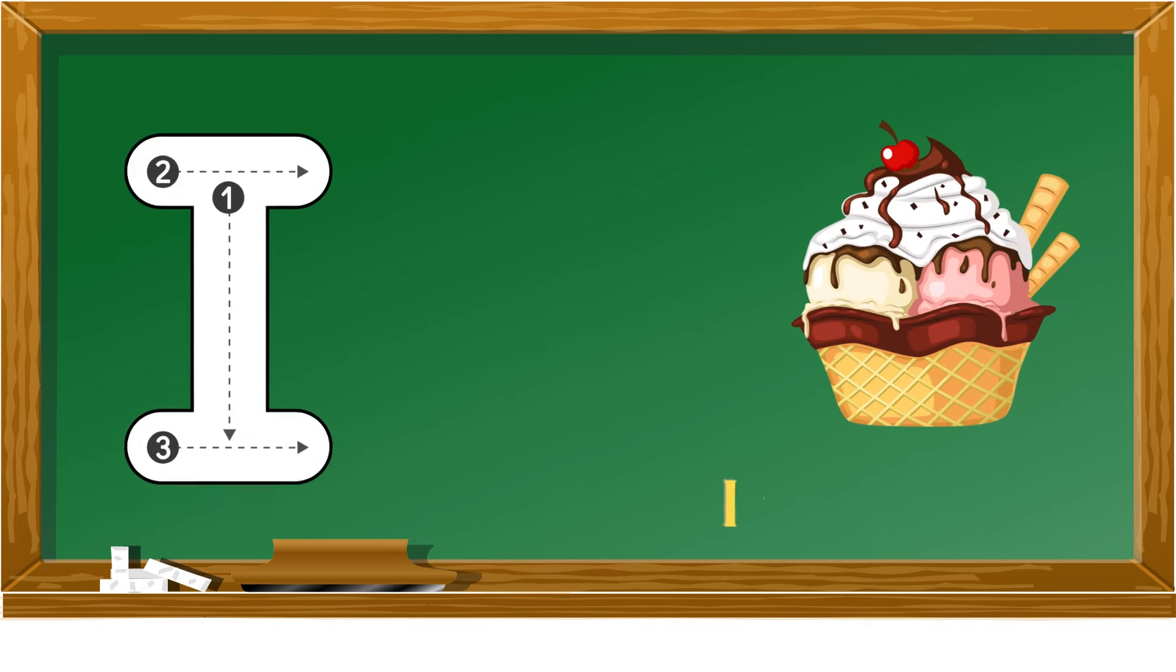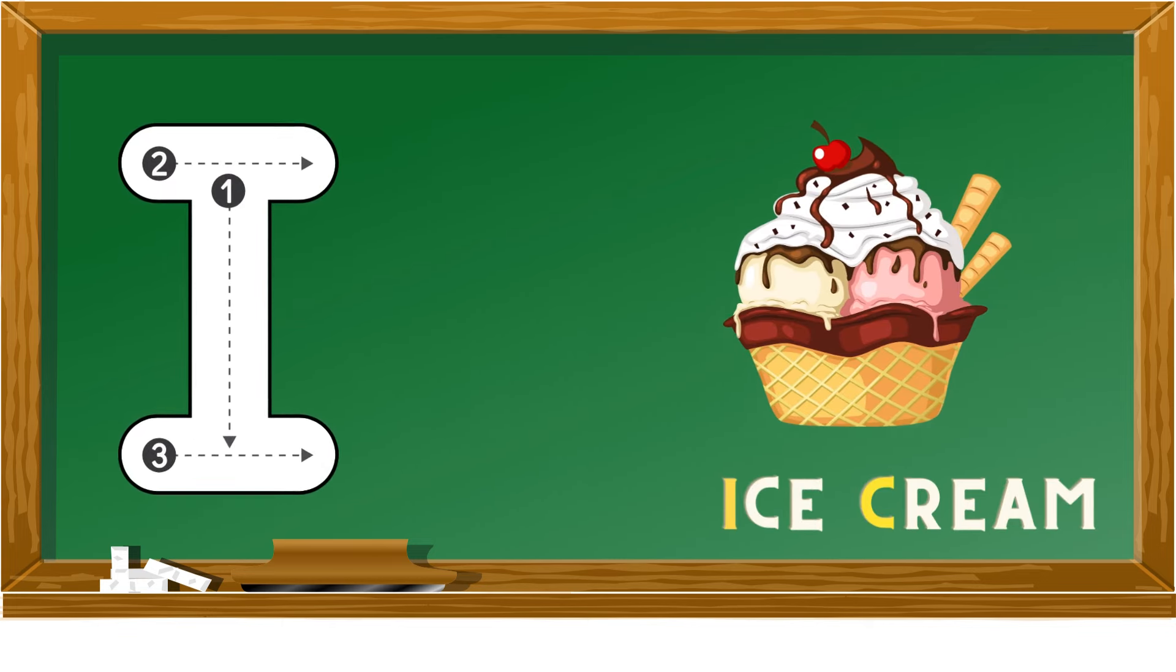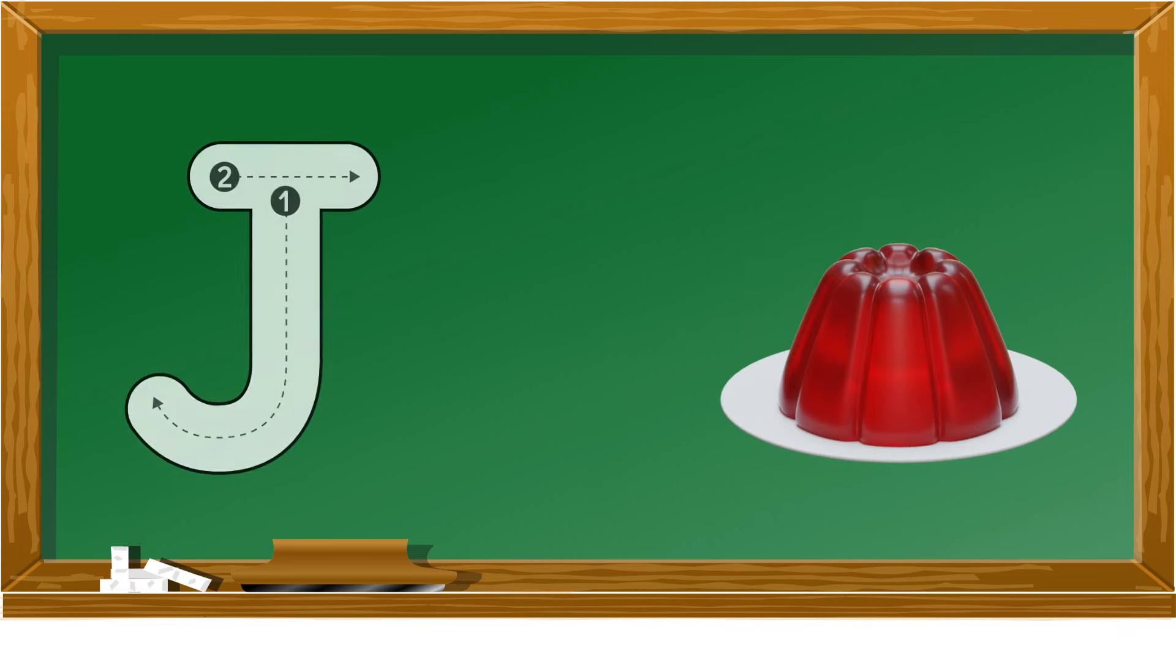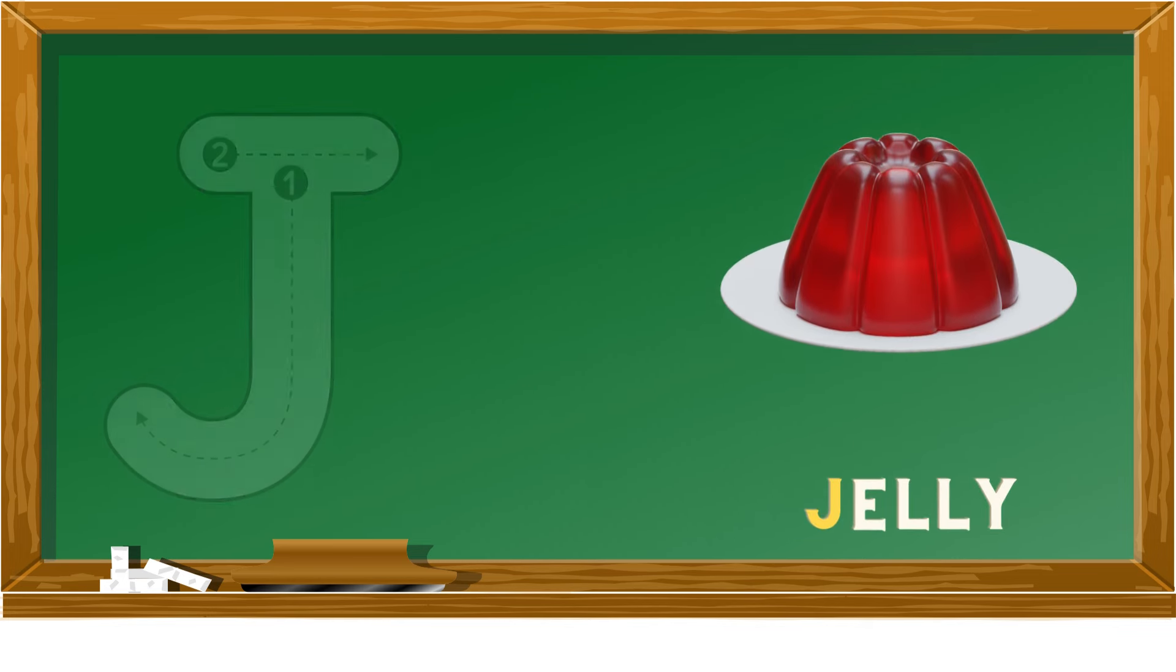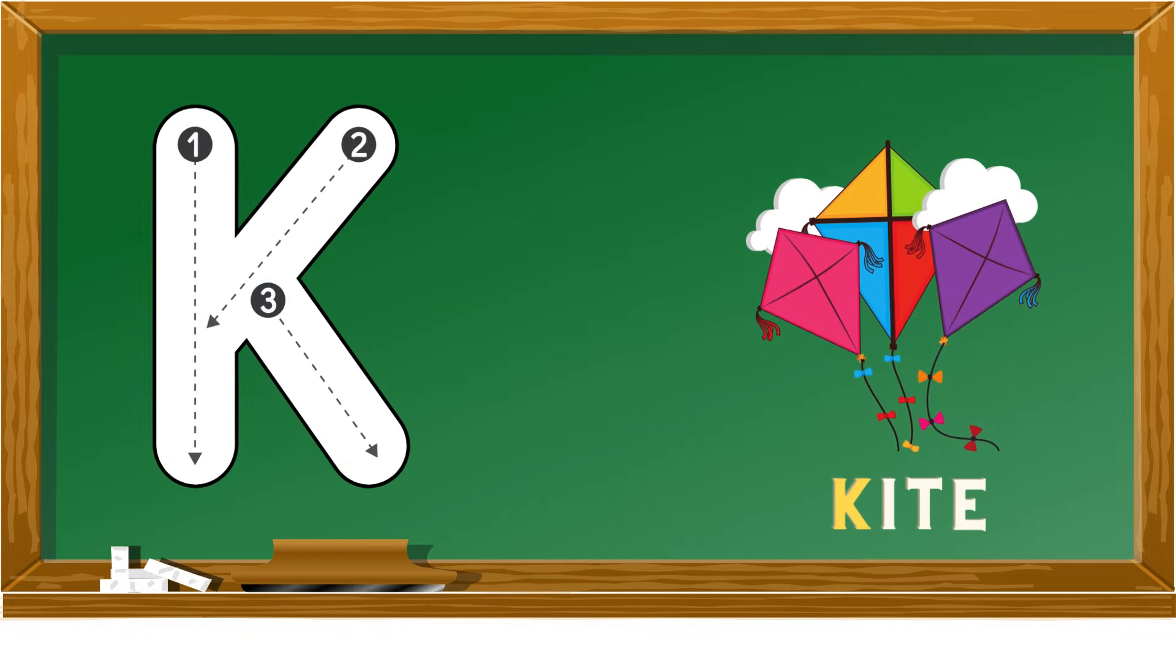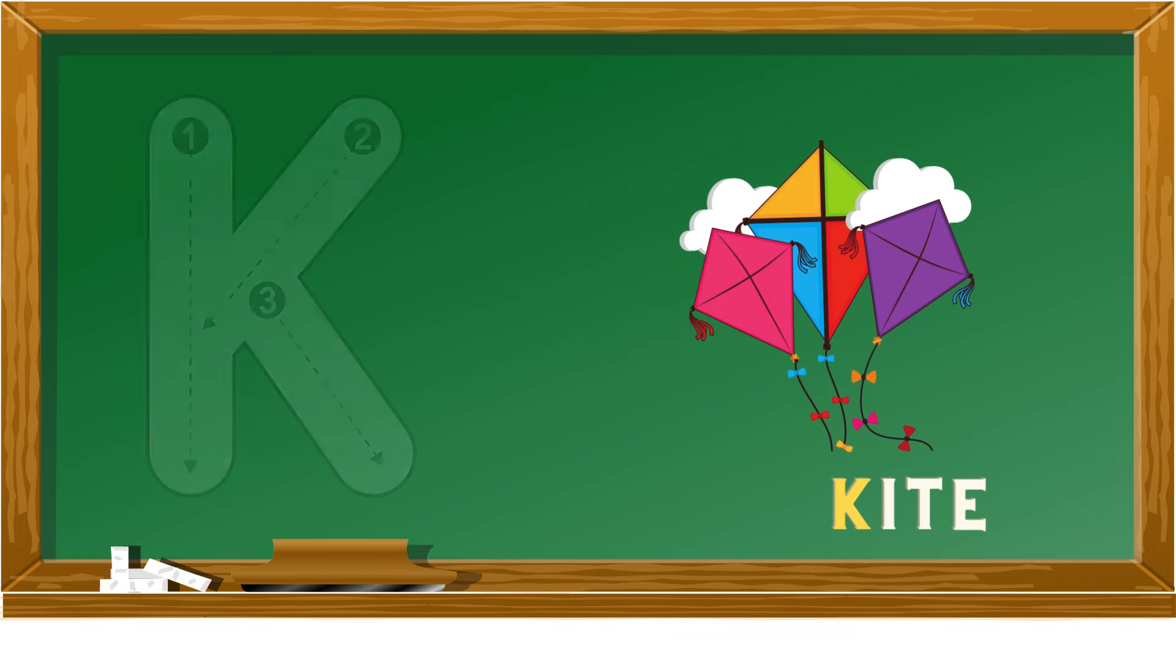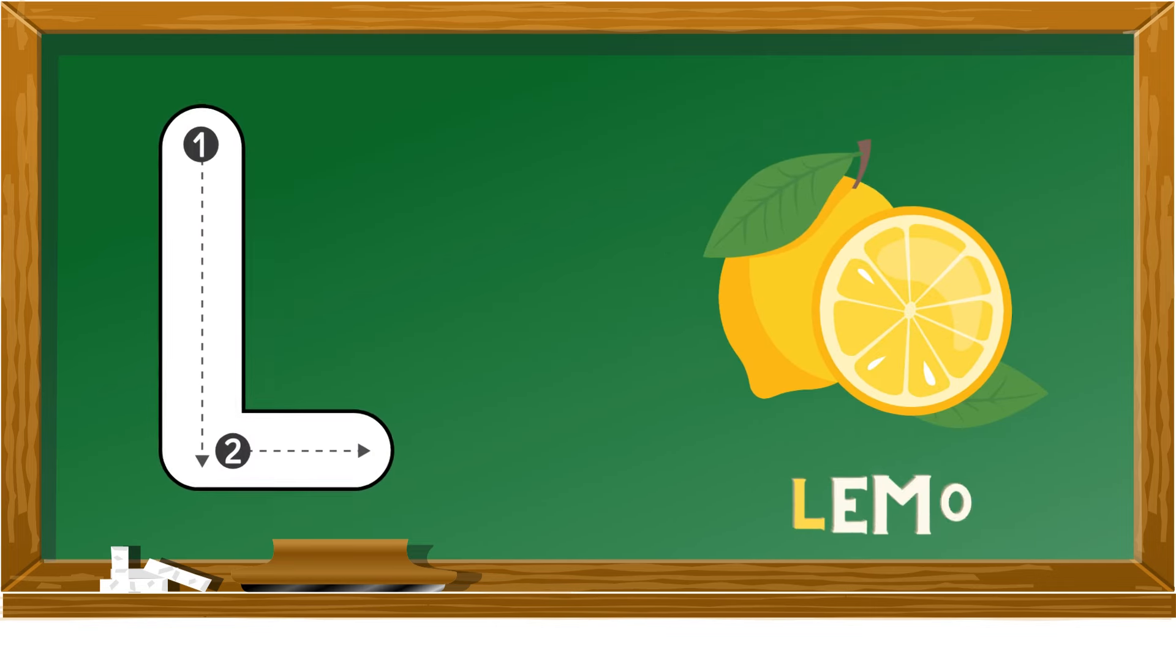I is for ice cream, J is for jelly, K is for kite, L is for lemon.